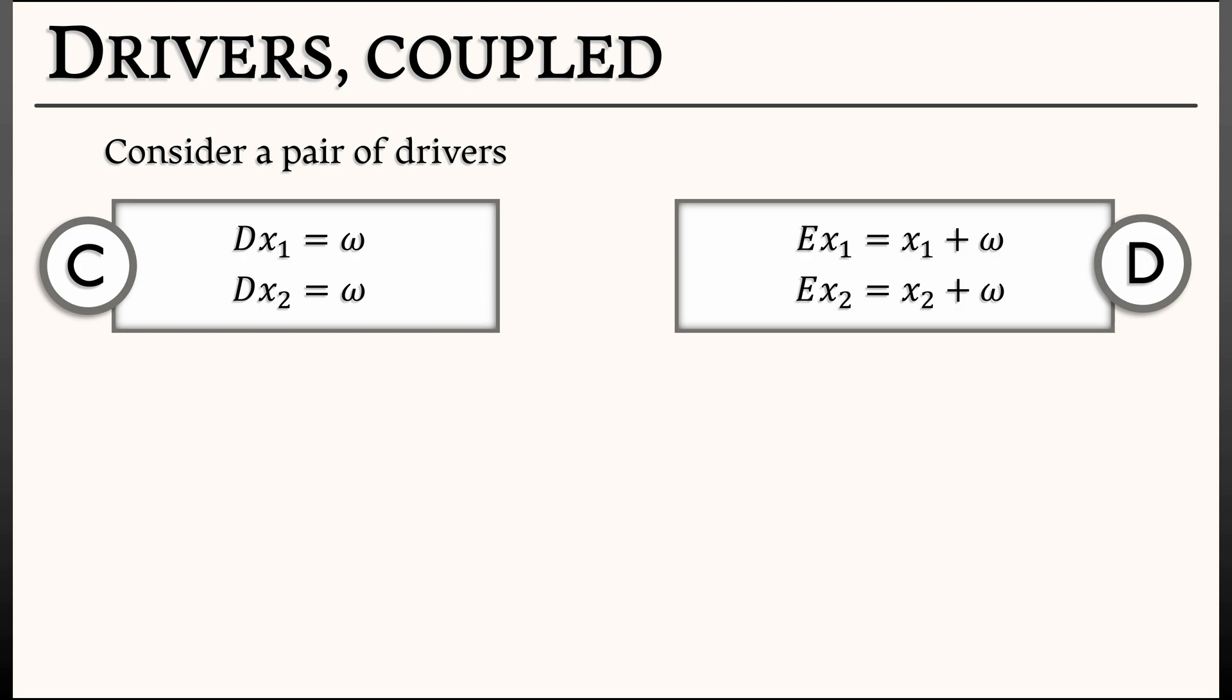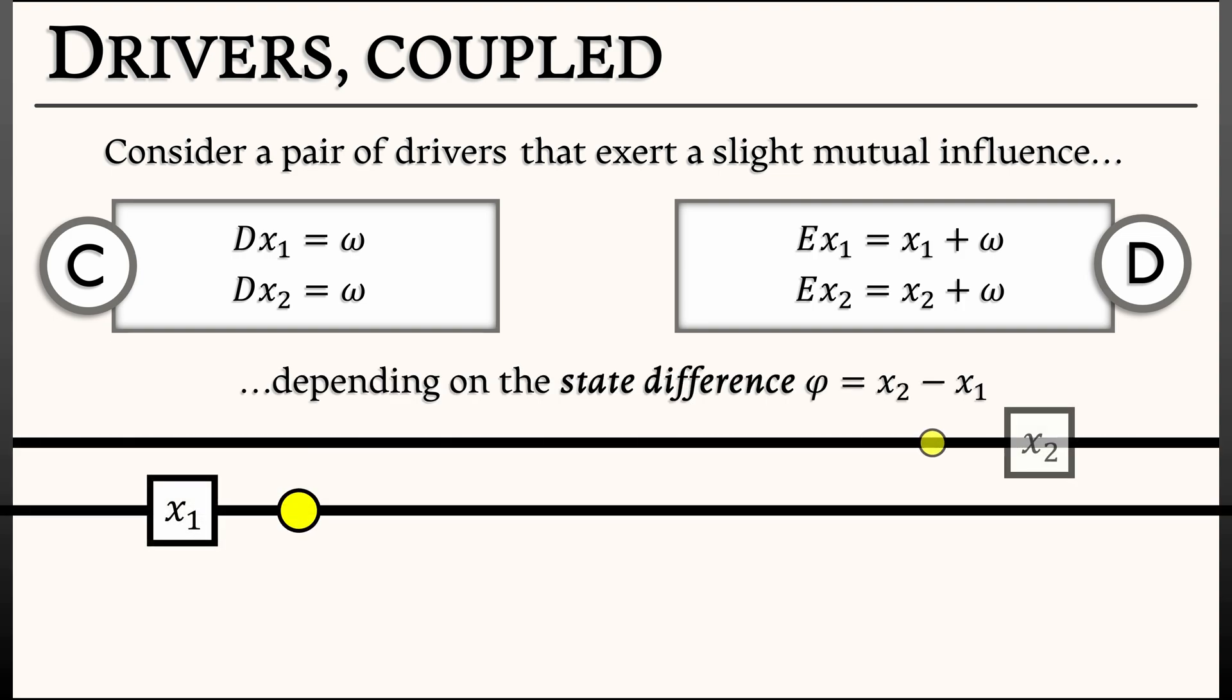The coupling is going to depend on the state difference. Let's call that phi and let's set that equal to x2 minus x1. So we look at these two drivers and they're in two different lanes. They have positions x1 and x2 respectively. If we look at the state difference, x2 minus x1, that's going to tell us what kind of coupling, what kind of influence we have.